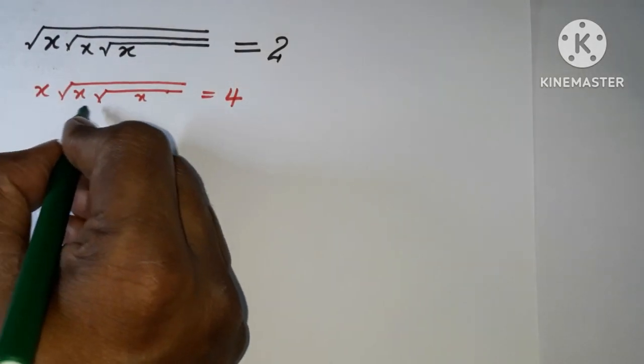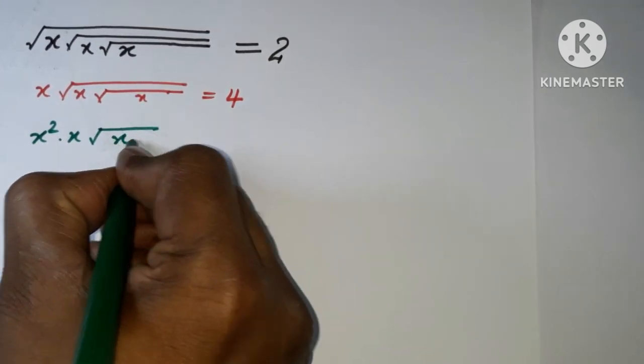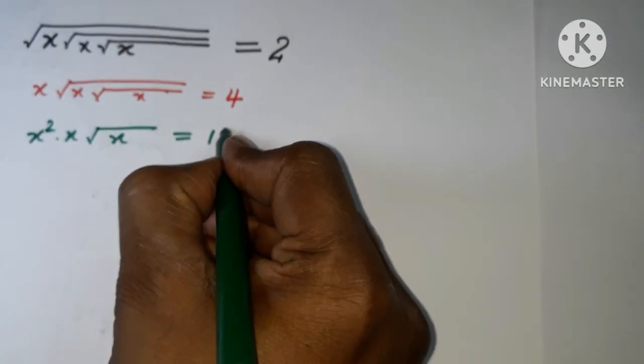Next, once again I'm squaring both sides. So it is x squared, and it is x, and it is root under x, and here it is coming 16.